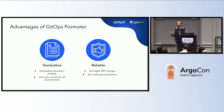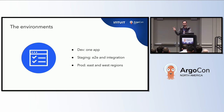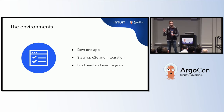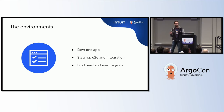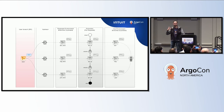Now let's set up what this live demo is going to look like. The environments: we're going to have dev, staging, and prod. We'll have one Argo CD app for dev, two for staging — for E2E and integration tests — and for prod we have east and west regions for high availability. This is just to show that environments can have multiple apps, but you could have anywhere from one to many apps per environment. Now it's time for the diagram. I want you to pay attention so that when Zach shows you the system in action, you can refer back and understand what's going on under the hood.